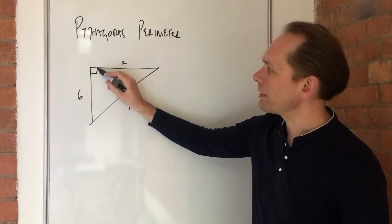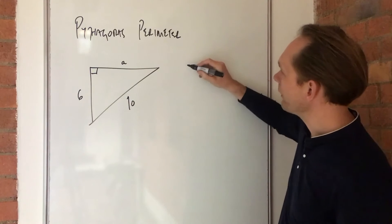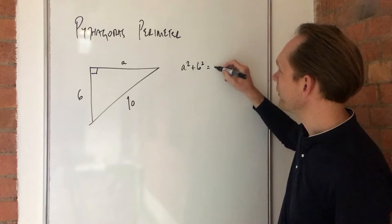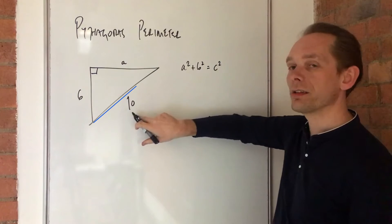So we need to think first of all about Pythagoras' Theorem. Well, that says a squared plus b squared equals c squared, where c is the long side, the hypotenuse.